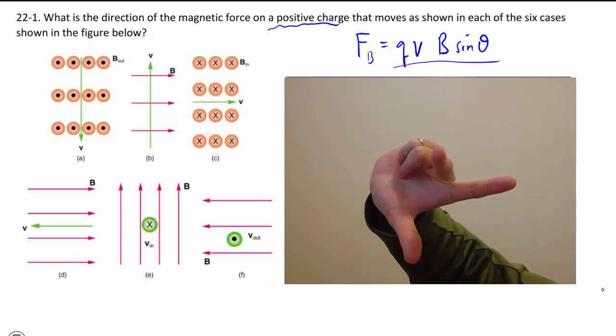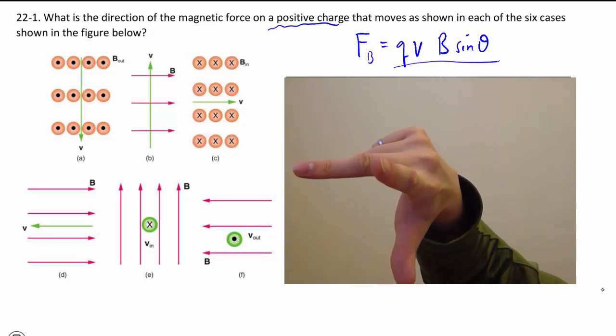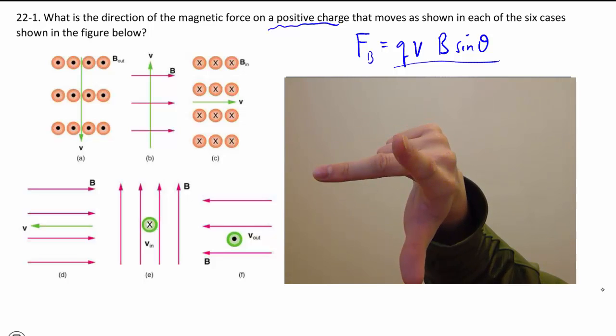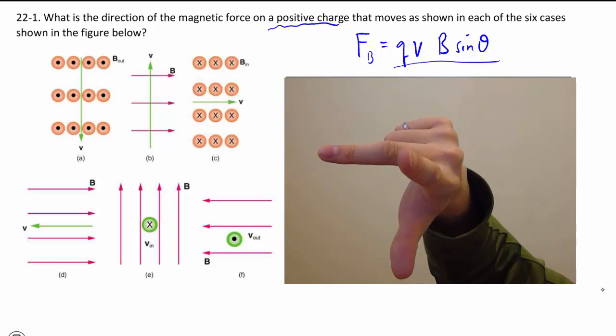The B here, magnetic field, which is my index finger, goes out of the page. That dot circle, because we have to draw in 3D now, means out of the page. Right out of the page, and then wherever my middle finger is, that's going to be where the magnetic force is going to be, and in this case, it will be to the left.